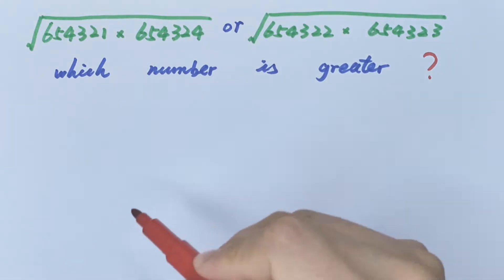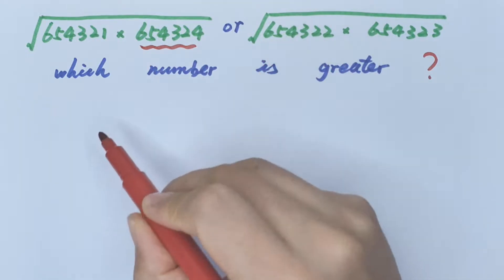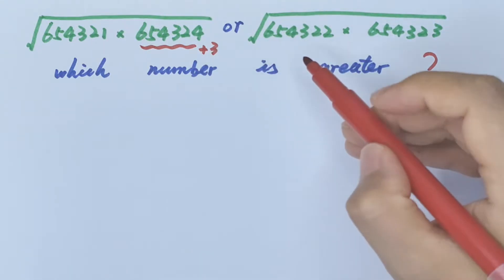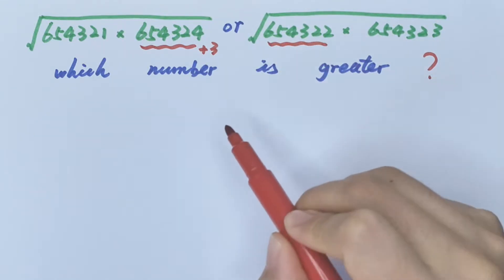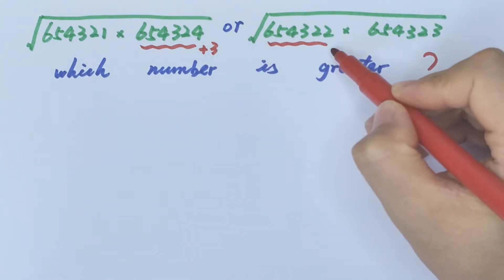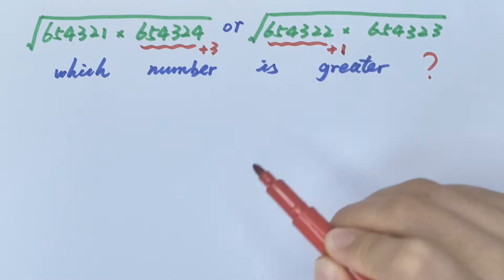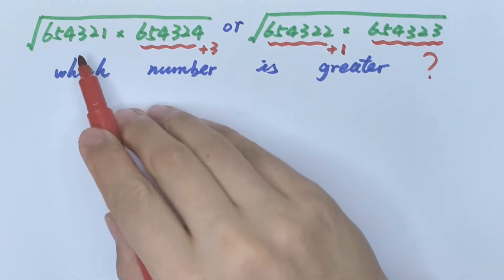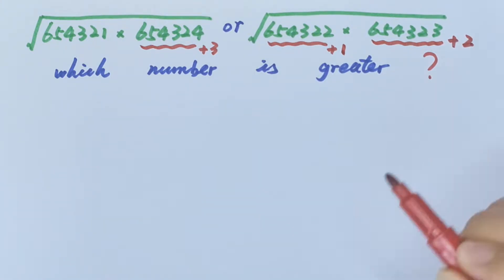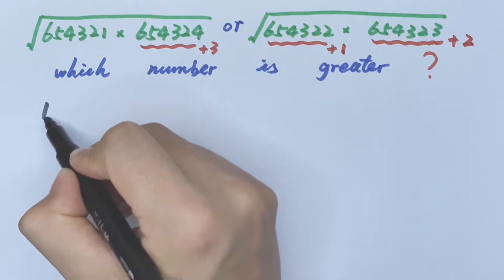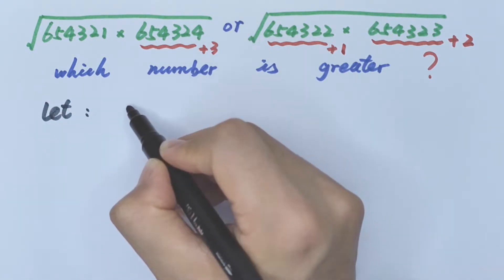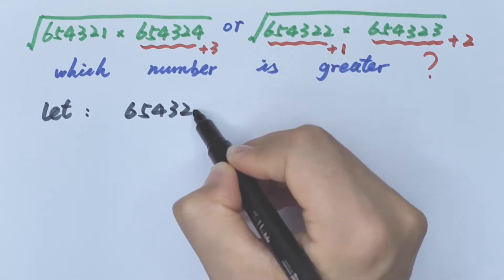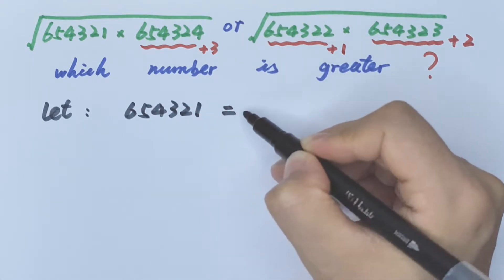We found this number is same as this plus 3, and this number is this number plus 1, and this is same as this plus 2. So we let 654321 equals t.